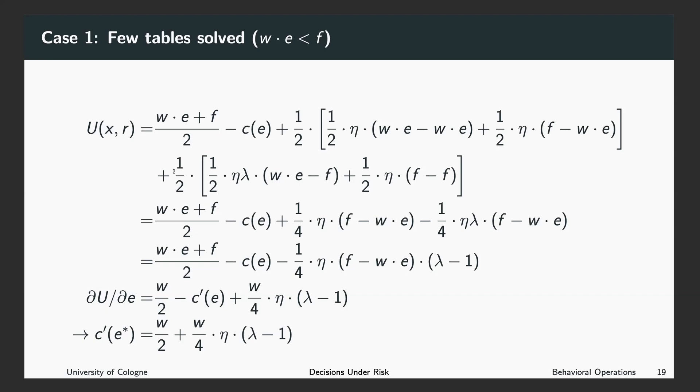So this part here represents a case where the piece rate was the reference point. Now we can turn to the other case. Also with 50% probability, the reference point is the fixed payment. In this case, with 50% probability, the actual payment is the fixed payment. And this is also what we expected. So then the actual payment and the reference point are the same. In this case, this is again zero.